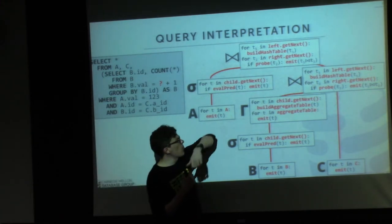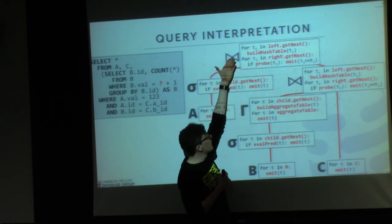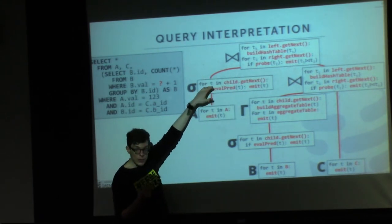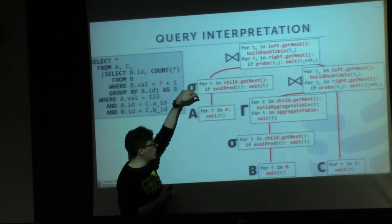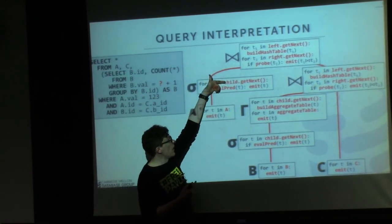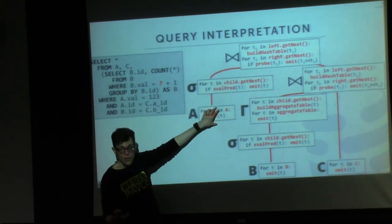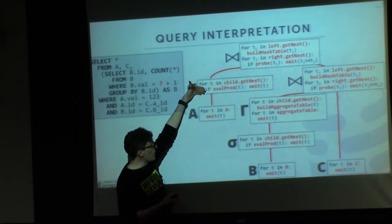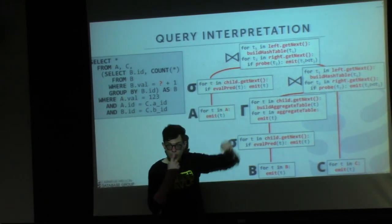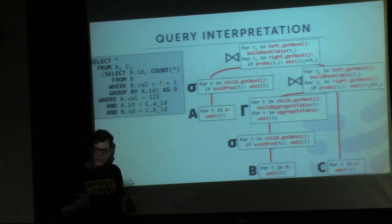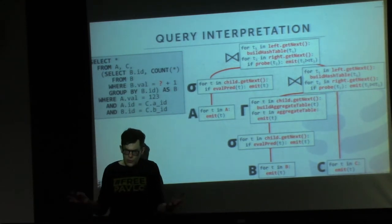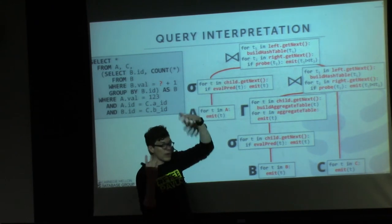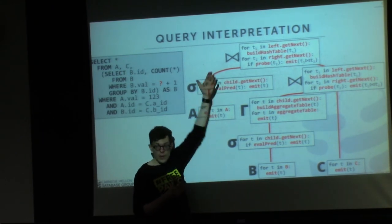The way the volcano iterator model works is you start at the top and start executing. The first line calls get-next on the left child to get some tuple before it can do any processing. It calls get-next down to the scan on A, which takes the tuples, shoves them up to the filter, the filter evaluates the predicate, and if it matches, passes it up. As a human this is easy to understand — you're traversing this tree, calling get-next on all your children operators and passing tuples up the plan. This is essentially what MySQL, Oracle, DB2, and Postgres all do.